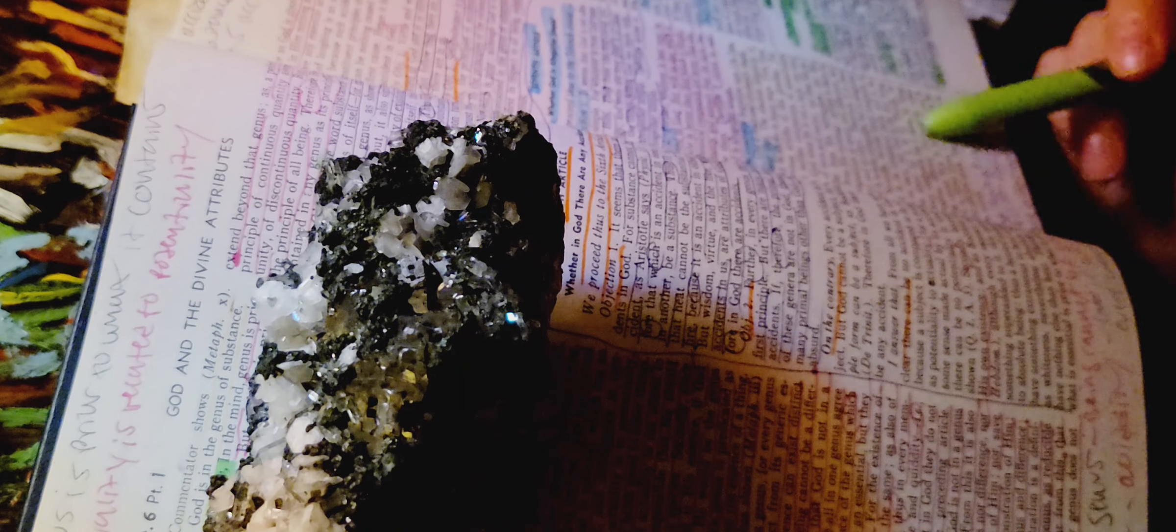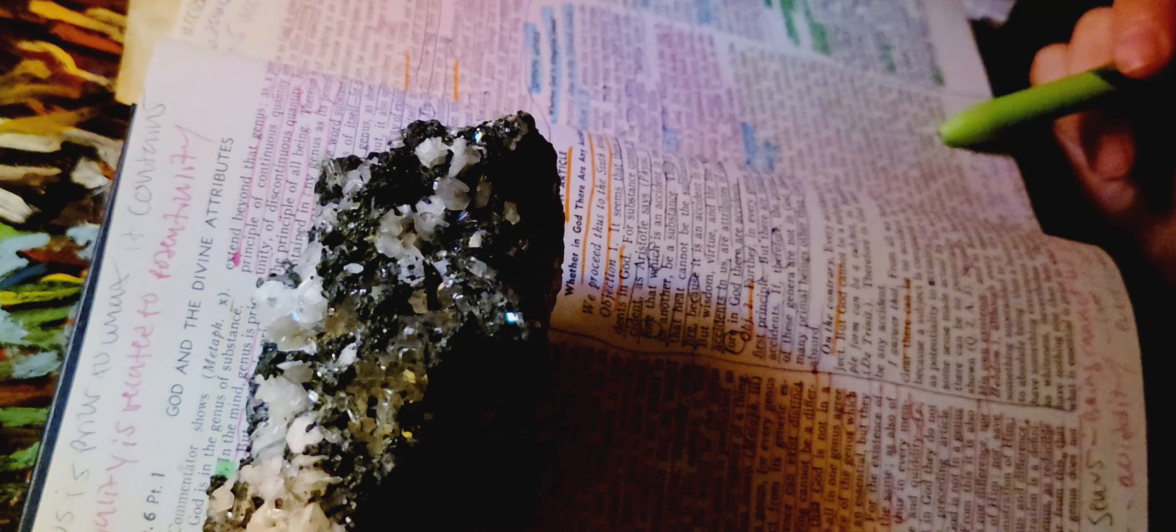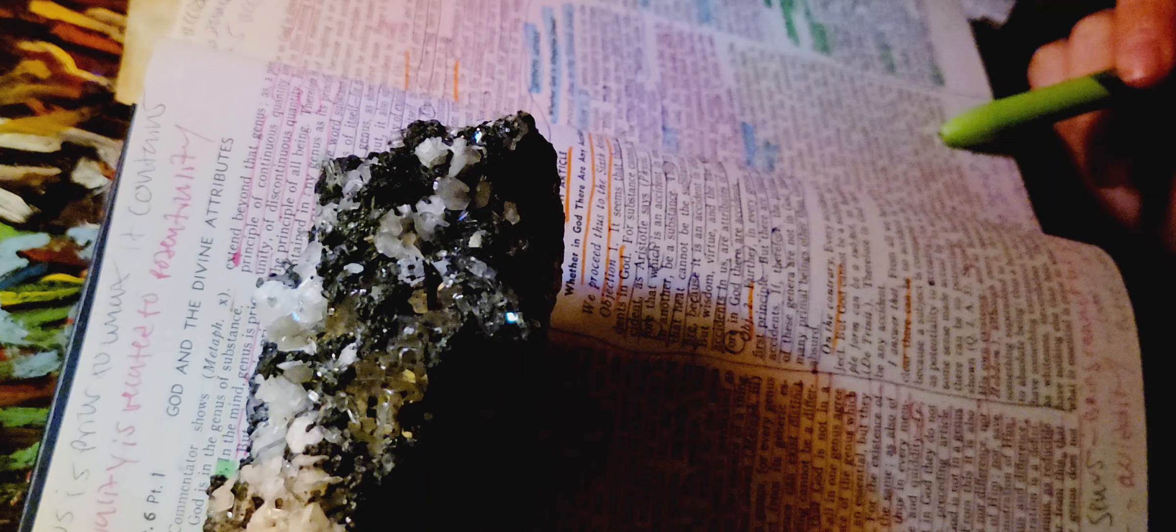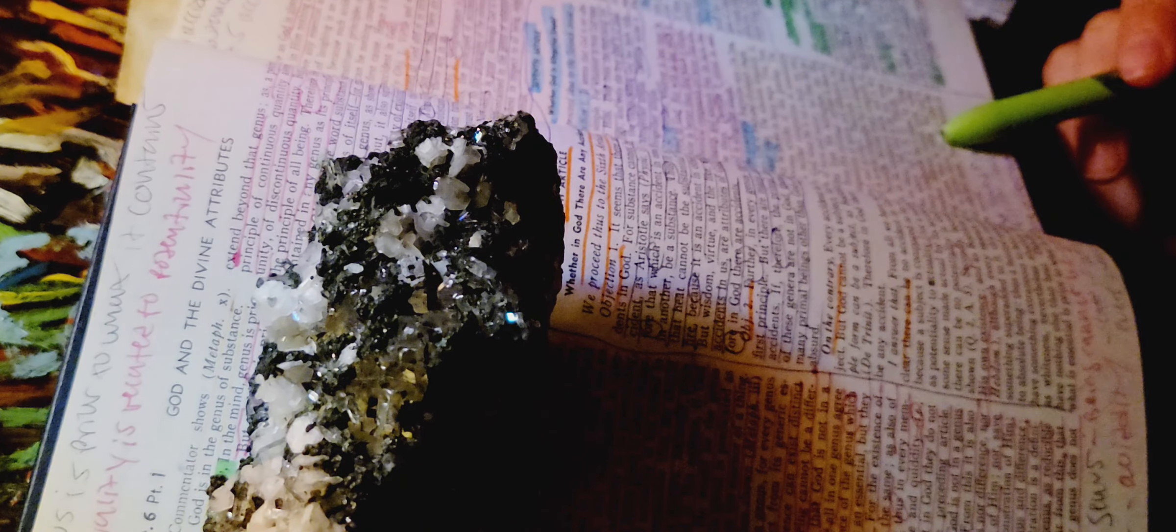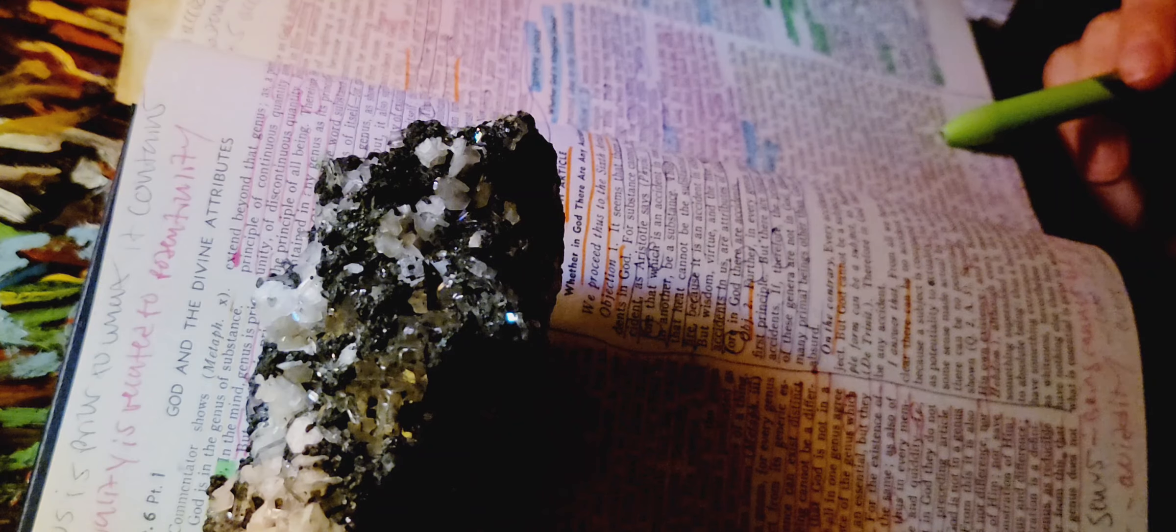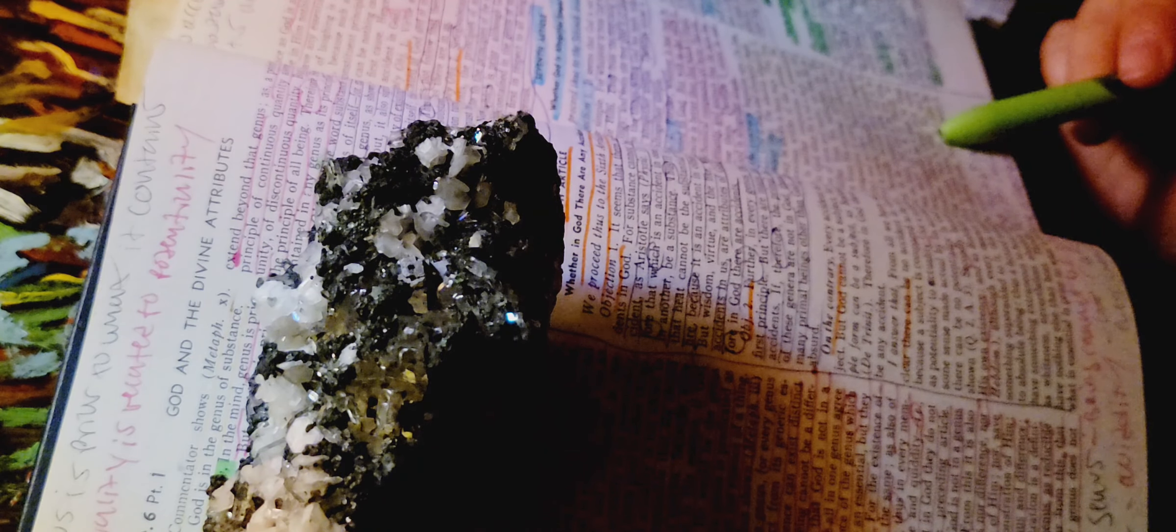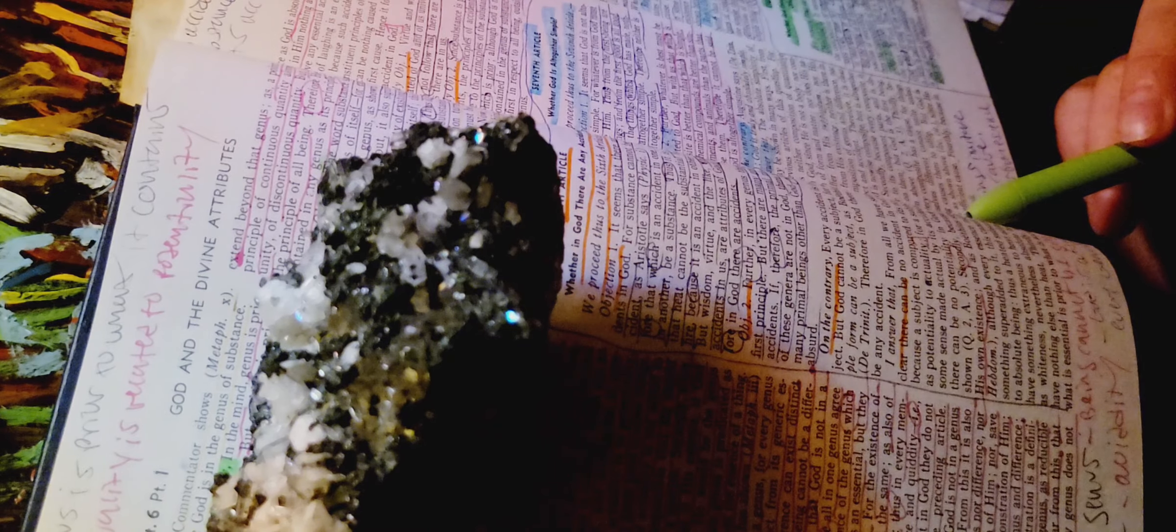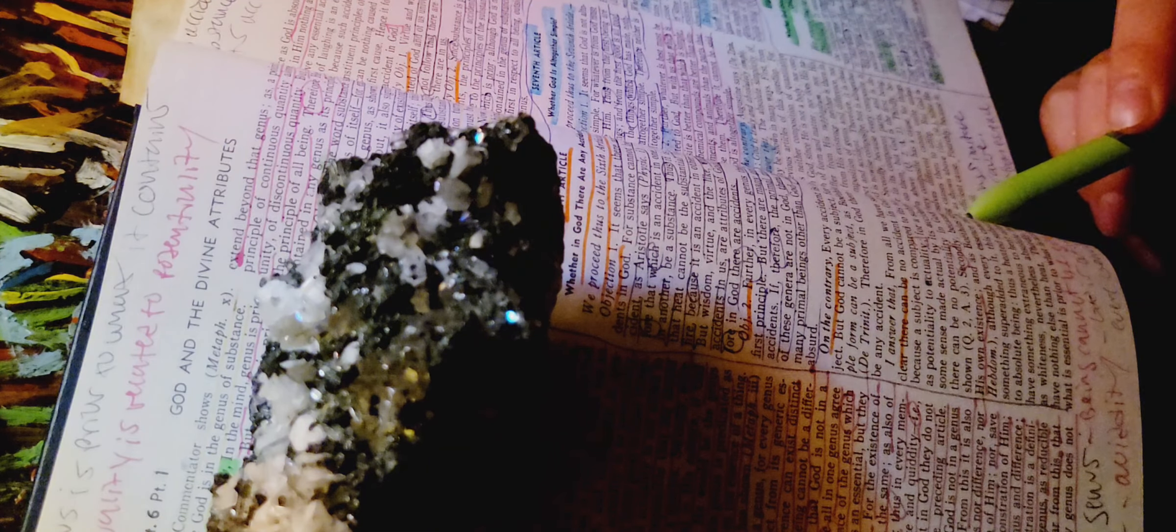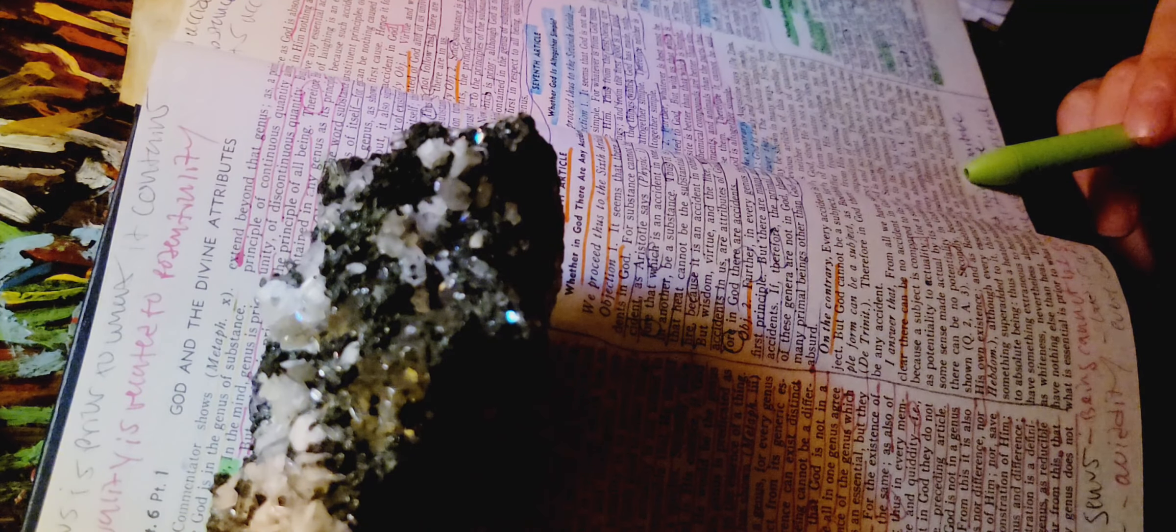Thirdly, because every composite has a cause, for things in themselves different cannot unite unless something causes them to unite. Notice here, composite has a cause. That composite, there's these different moving parts. They can unite when something causes them to unite. But remember he said that God is the first cause. So nothing is going to make God divided. He will never need to be united because God is one. But God is not caused. God is uncaused because he's the first efficient cause.